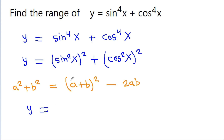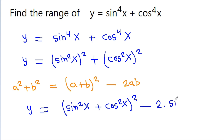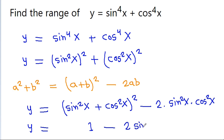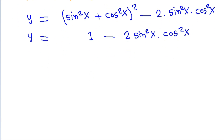We get y = (sin²x + cos²x)² - 2·sin²x·cos²x. Since sin²x + cos²x = 1, this becomes y = 1 - 2·sin²x·cos²x.